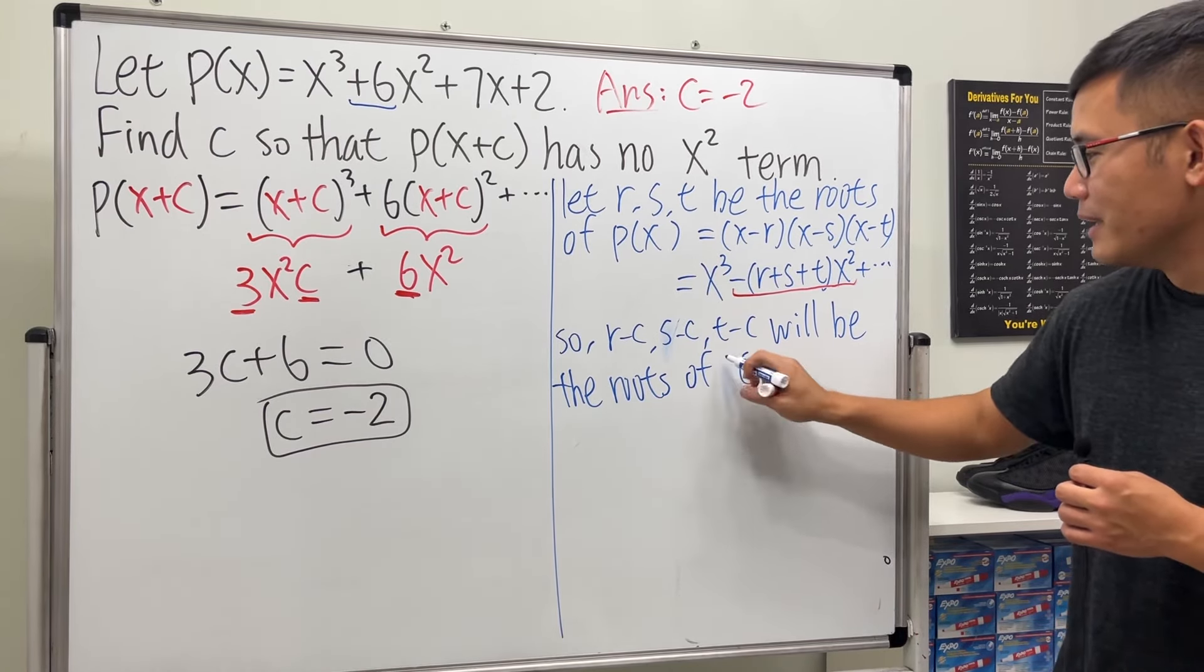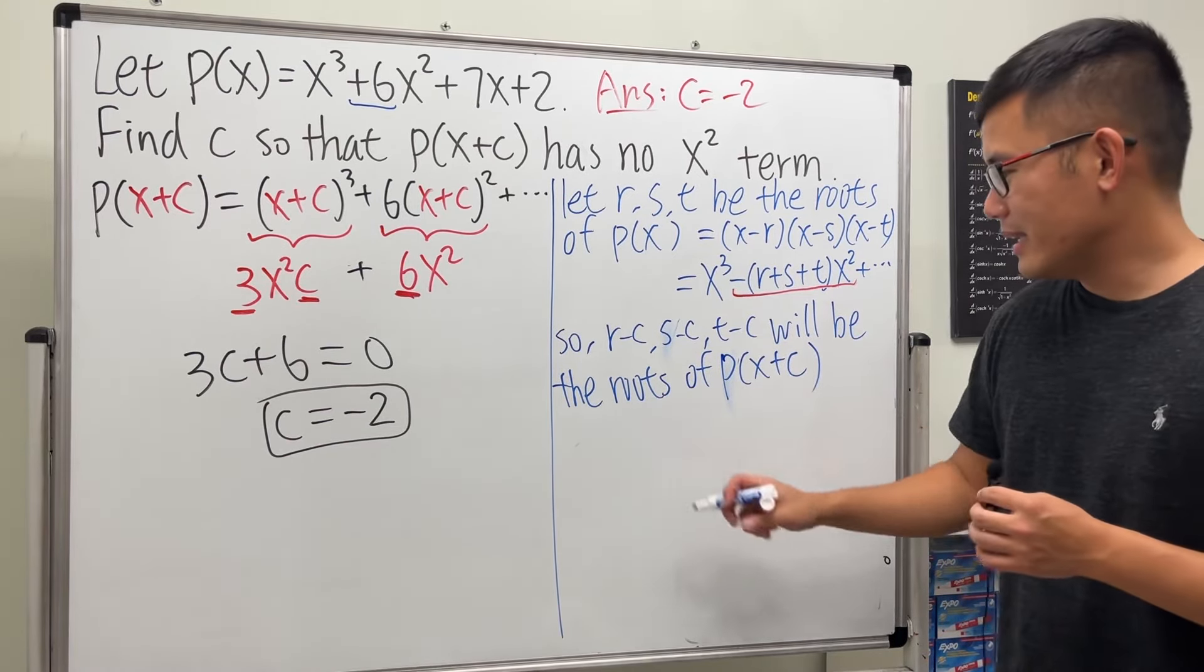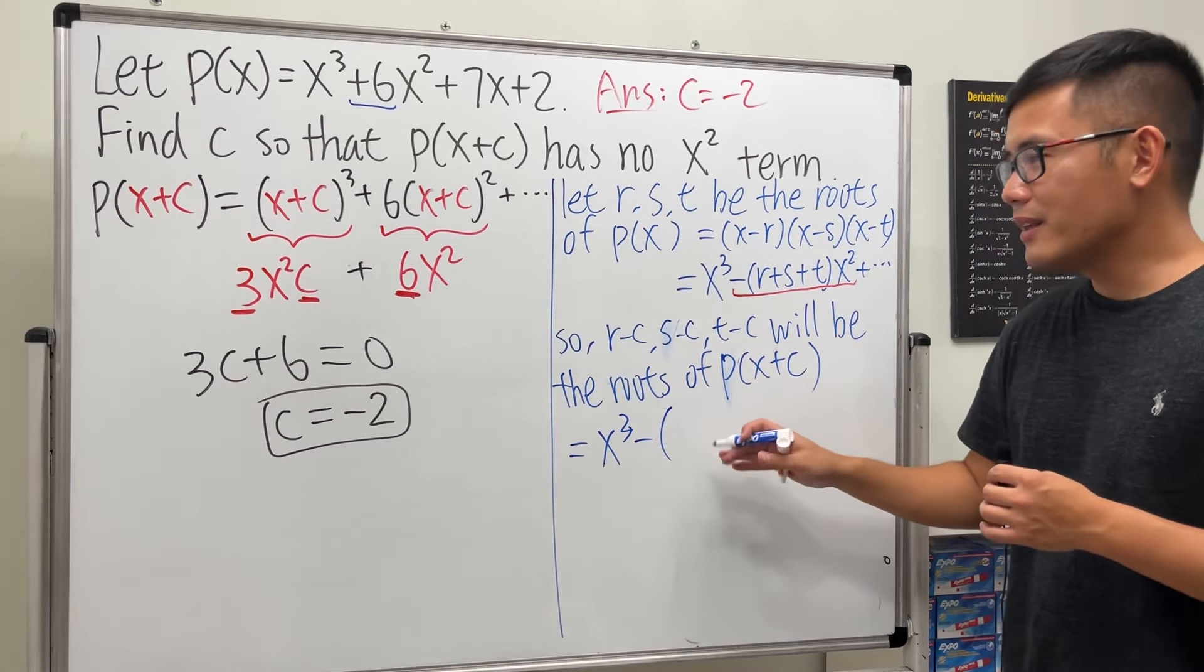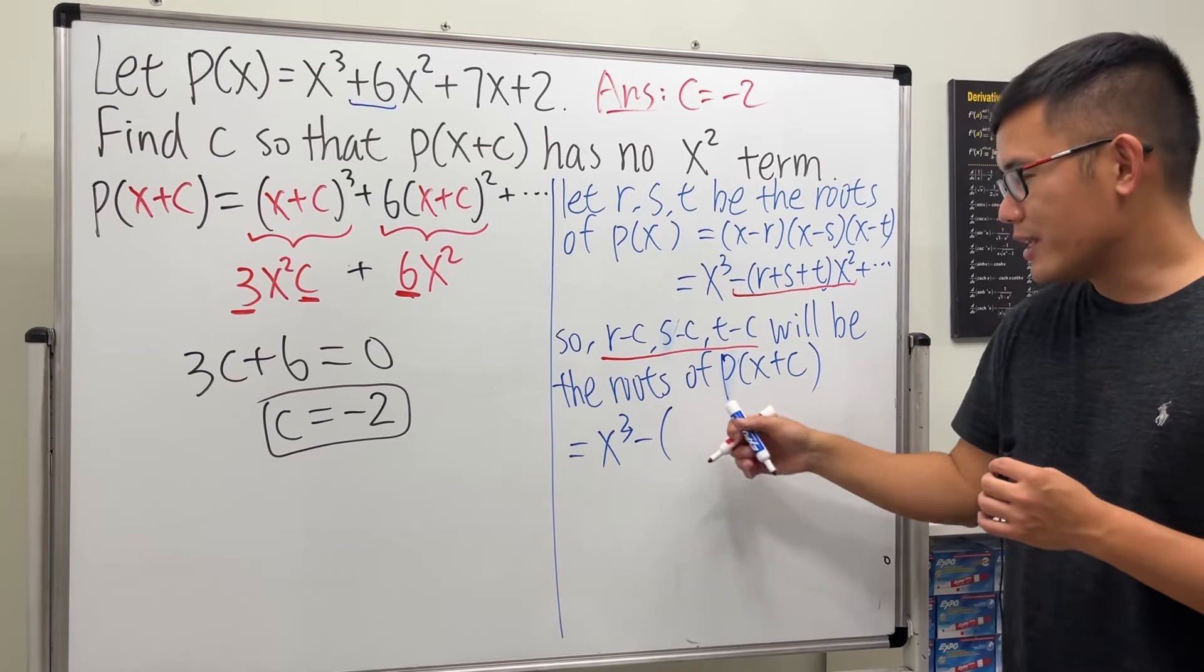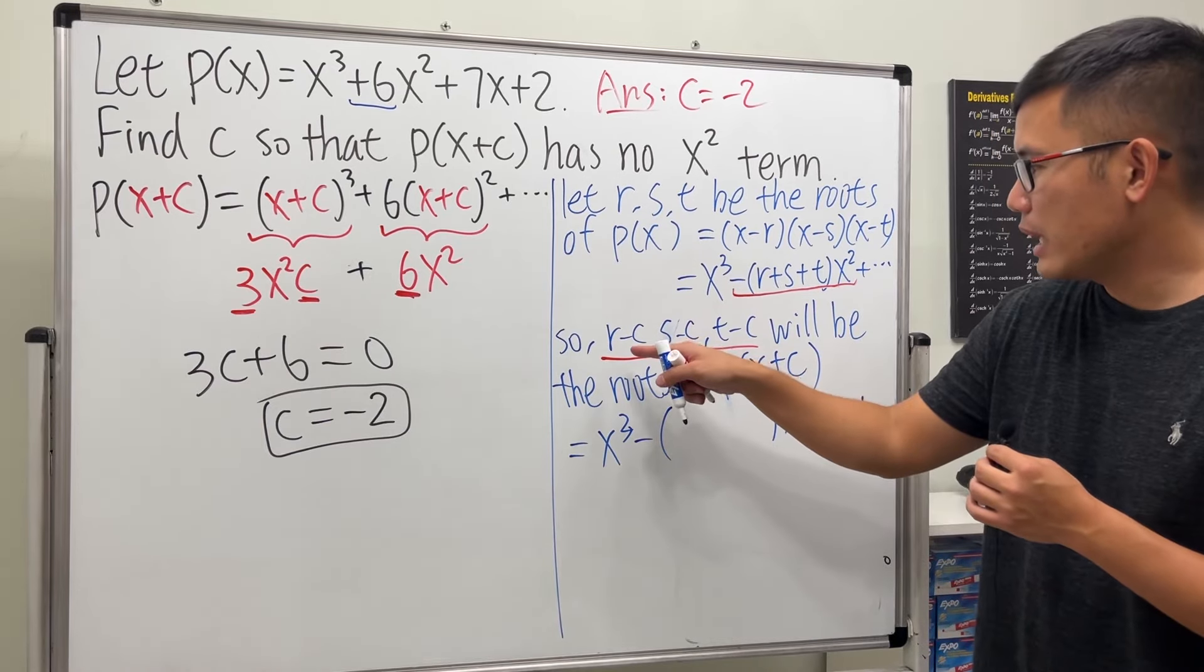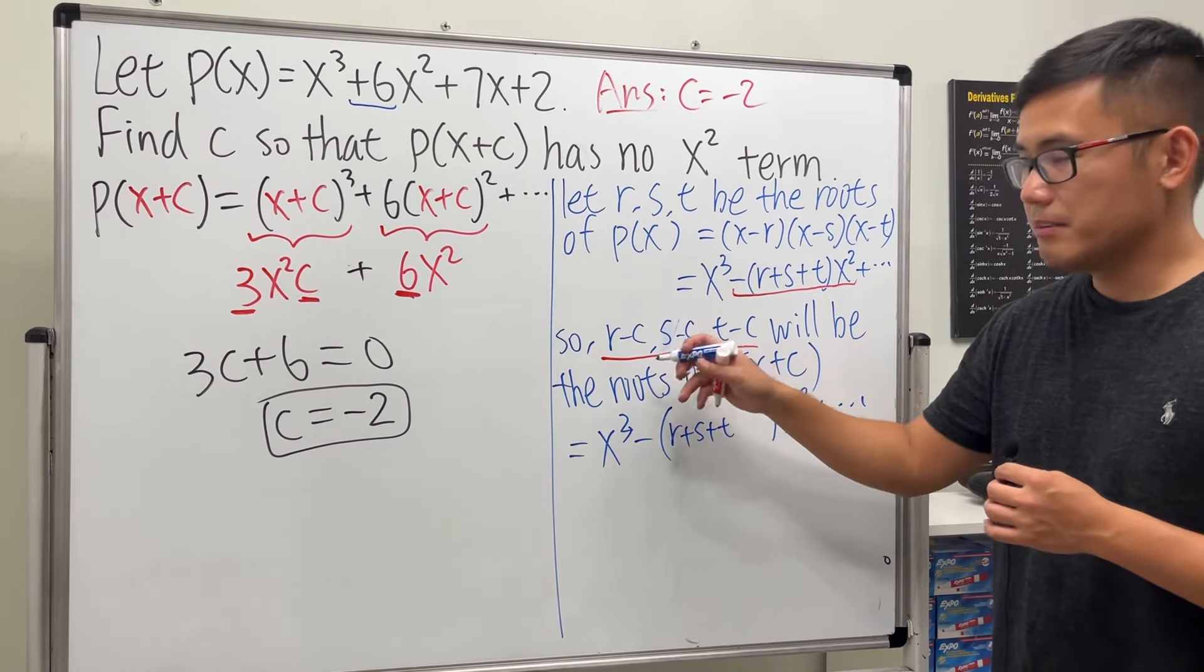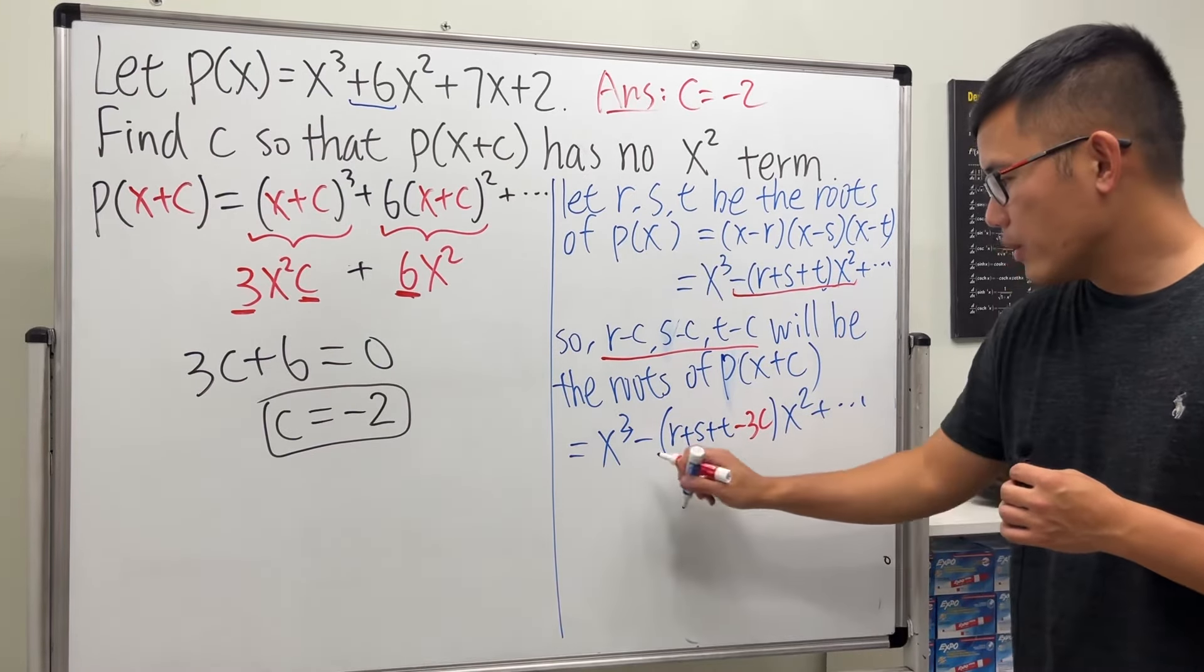You can write it down again: the first term is x³, and then for the coefficient of the x² term, you enter the sum of these three roots right here. I'm just going to write down r+s+t minus 3c.